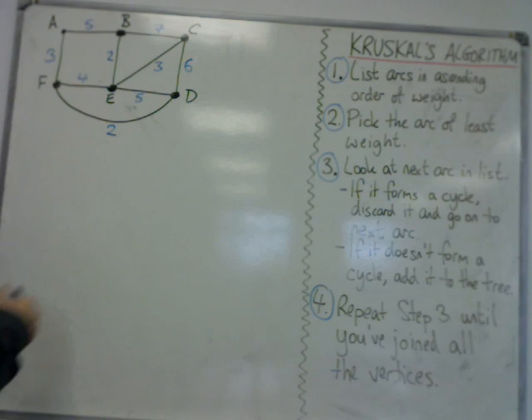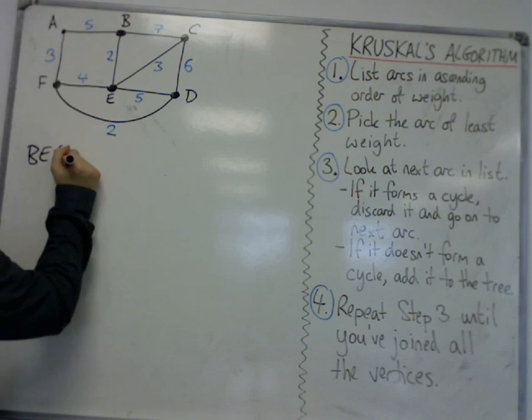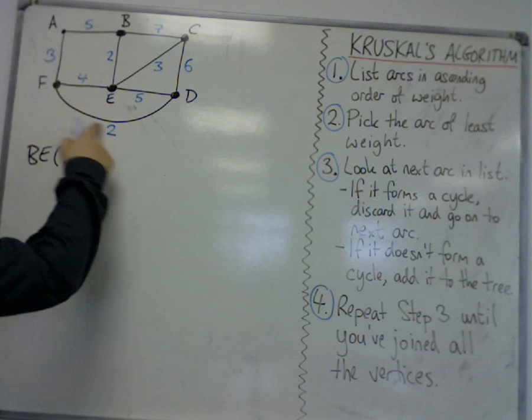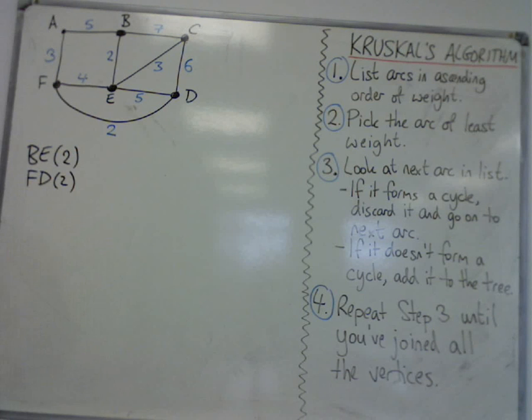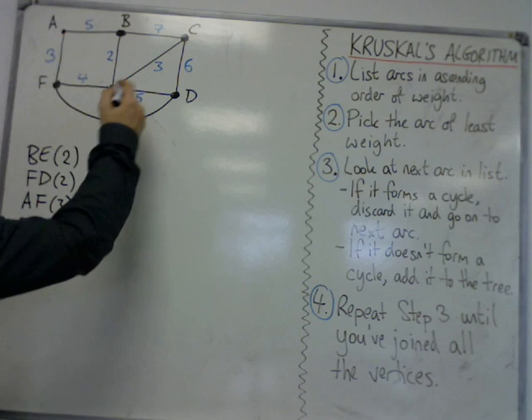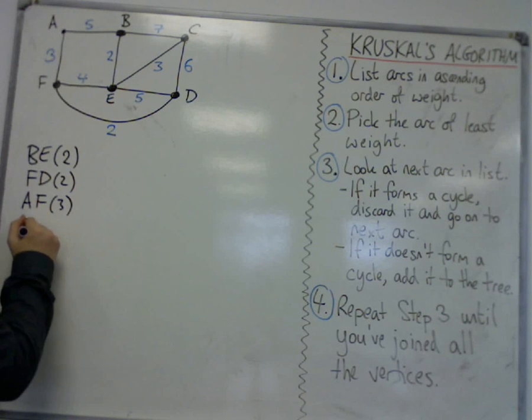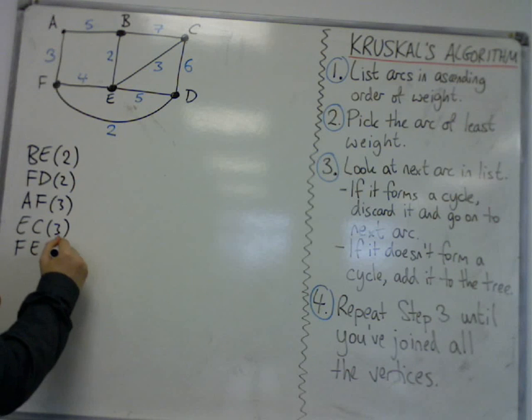So the first thing to do with Kruskal's algorithm is to list the arcs in ascending order of weight. So first of all I've spotted BE with weight 2. I've also got FD with weight 2. It doesn't matter which way round I write them. I've got AF with weight 3. I've got EC with weight 3 as well. Then I have FE for 4.